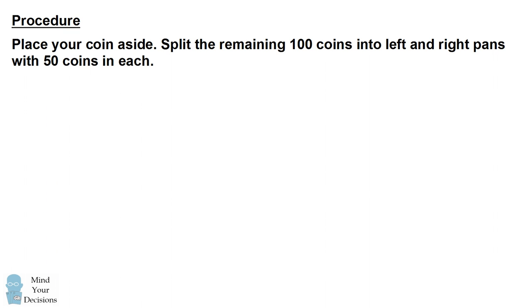Here's how it works. You place your coin aside. Then you split the remaining 100 coins into left and right pans with 50 coins in each pan.